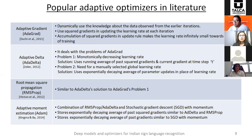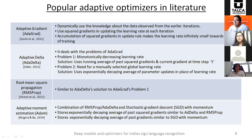To solve this problem, AdaDelta (2012) was developed. It solves two problems of AdaGrad: the monotonically decreasing learning rate, by using a running average of past squared gradients instead of accumulating all of them; and it also replaces the learning rate with an exponentially decaying average of parameter updates, so no manual learning rate needs to be provided.